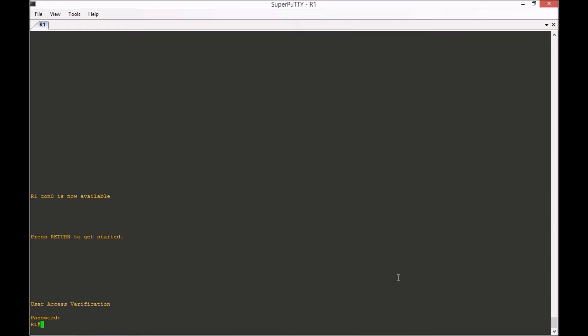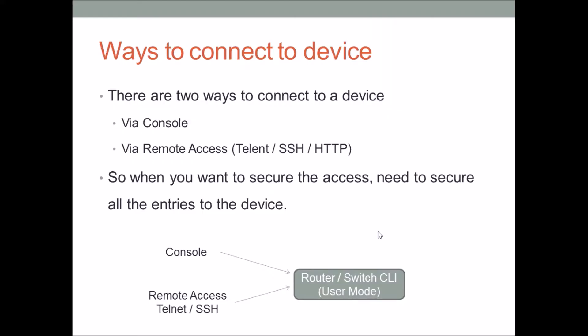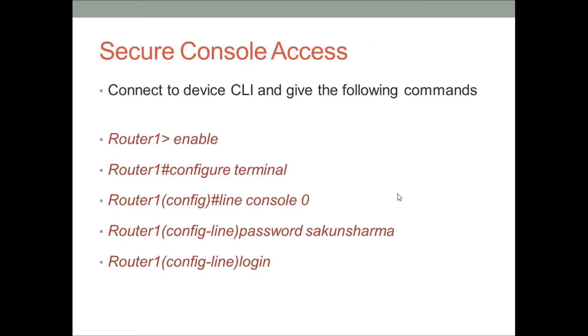So to summarize securing your console port: go to enable mode, then 'configure terminal' to enter global configuration mode, then 'line console 0' to enter the console port configuration, then 'password [yourpassword]' to set the password, and finally 'login' to tell the router to authenticate users before granting access.